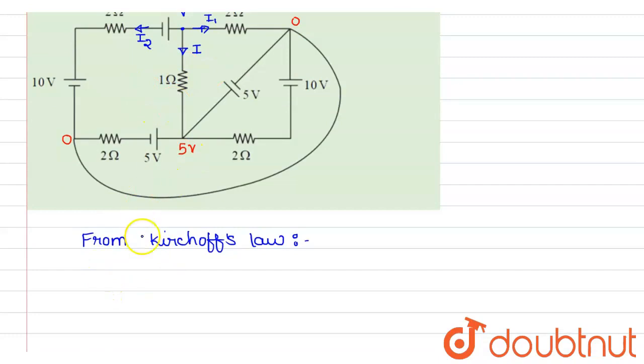We know that from Kirchhoff's law, current moving out from a node, the sum of all the currents will be zero. So I am writing: i plus i1 plus i2 will be equal to zero, because this is a node.